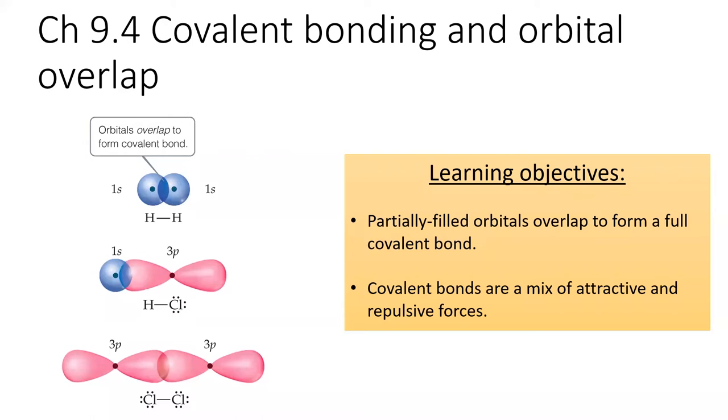The remainder of Chapter 9 involves a much closer look at covalent bonding. We'll visualize what an actual covalent bond looks like. In this short section, we'll see how a mixture of attractive and repulsive forces bring two atoms together in a covalent bond, but prevent the atoms from getting too close to each other.